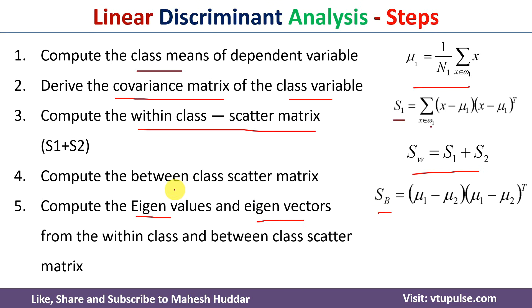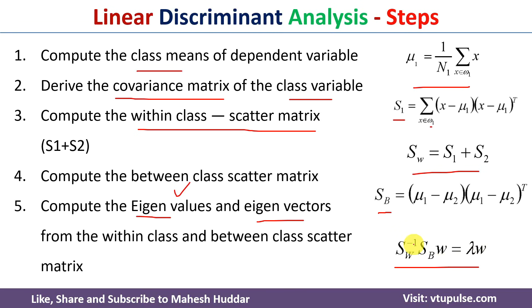The eigenvalues are calculated using the formula: SW inverse multiplied by SB, multiplied by w, which is equivalent to lambda times w. Once you solve this equation, you will get the lambda values for each class. For example, if you have two classes, you will get lambda one and lambda two; if you have three classes, you will get lambda one, lambda two, and lambda three, and so on.